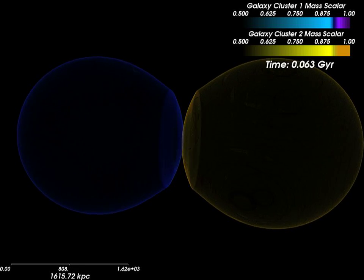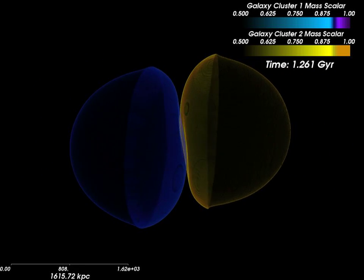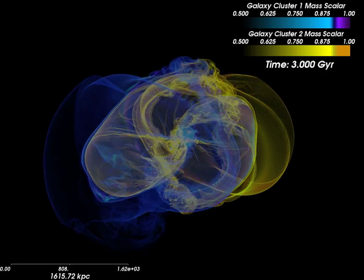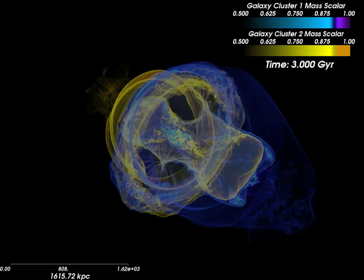Most of the cluster's ordinary matter is in the form of a hot-diffuse plasma known as the intracluster medium. Unlike the dark matter, the gases interact directly.